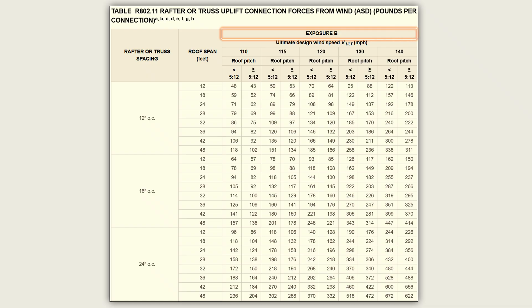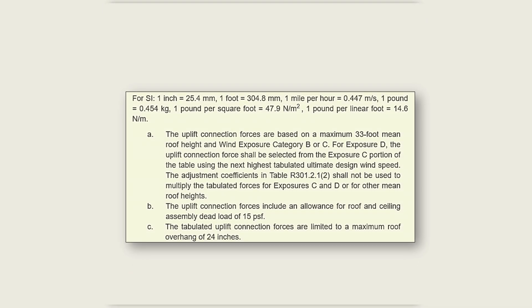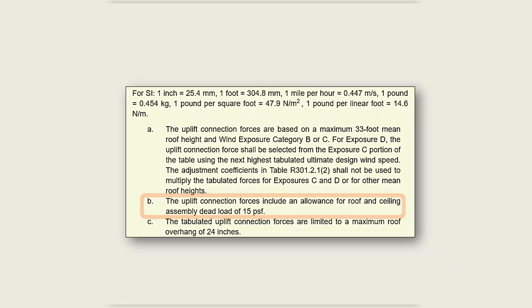Table R802.11 is broadly grouped based on wind exposure, so we will focus on the exposure B section. The next broad group is rafter spacing; since our rafters are spaced at 24 inches on center, we will focus on the 24-inch spacing row. For a wind speed of 110 miles per hour, a roof pitch of 4 to 12 (which is less than 5 to 12), and a roof span of 36 feet, the uplift demand at the rafter-to-wall support is 188 pounds. According to footnote B in the same table, this uplift force already includes an allowance for a roof-ceiling assembly dead load of 15 pounds per square foot, meaning dead loads have already been subtracted to arrive at this net uplift load.